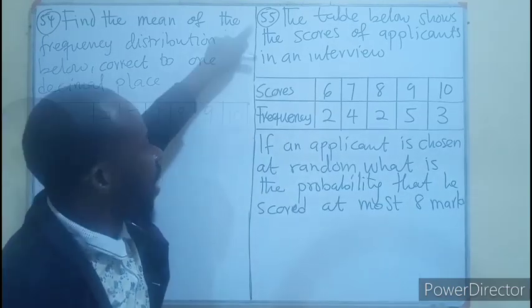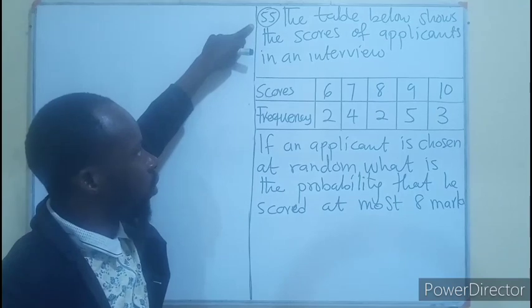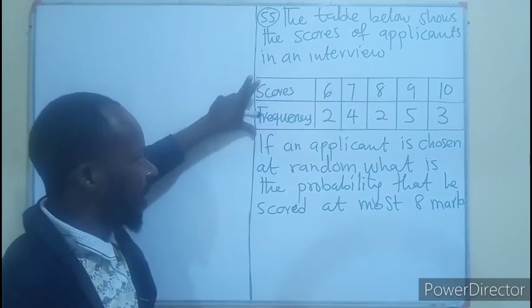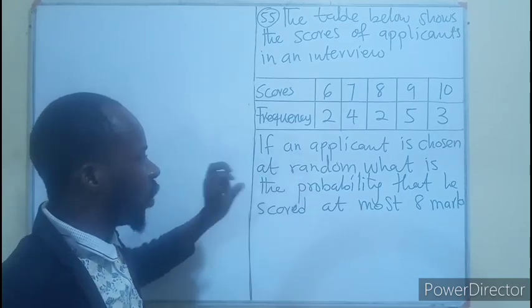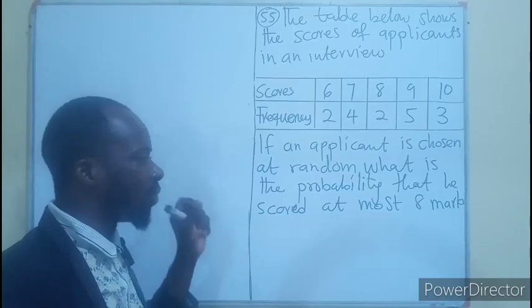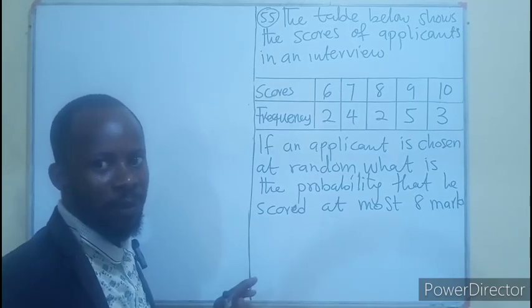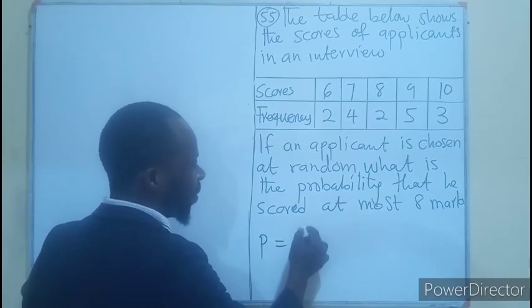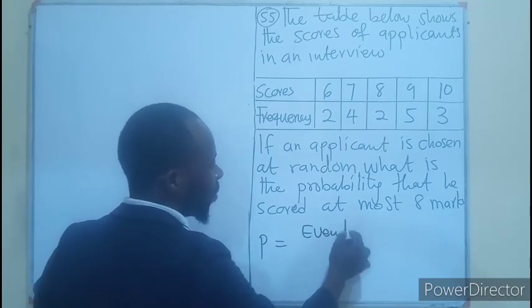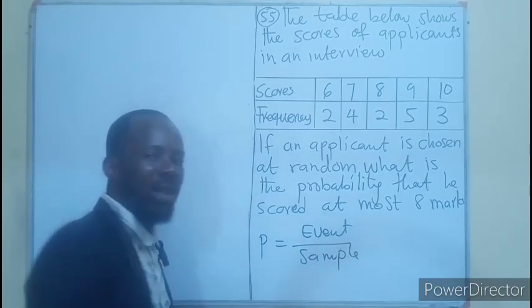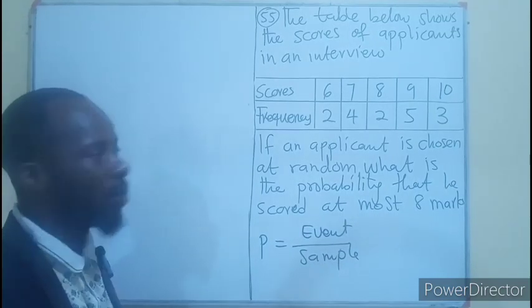Question 55. The table below shows the scores of applicants in an interview. If an applicant is chosen at random, what is the probability that he scored at most 8 marks? So first of all, to find the probability, we need event over total sample.